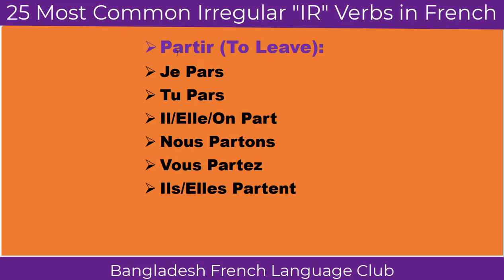The first one: Partir — to leave. Je pars, tu pars, il/elle part, nous partons, vous partez, ils/elles partent. Here we can see there is no particular pattern. The regular IR verb follows a particular pattern: we add -IS with the stem for je and tu, -IT for il/elle, -ISSONS for nous, -ISSEZ for vous, -ISSENT for ils/elles. But here there is no such rule at all. That's why this is irregular — we have to memorize it, otherwise there is no way to master it.